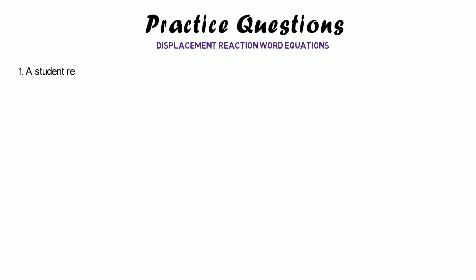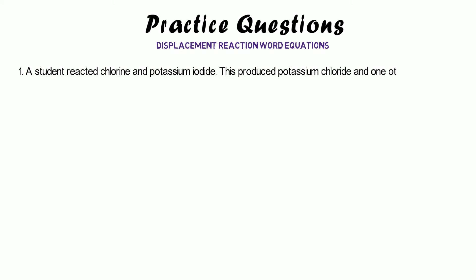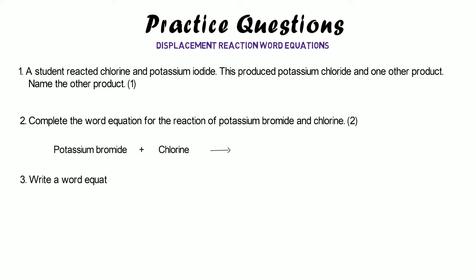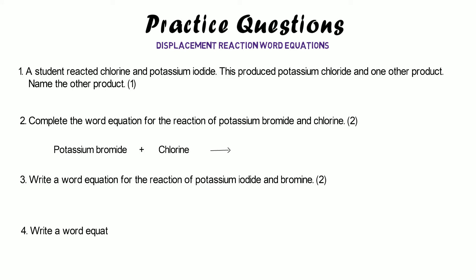Here are some practice questions for writing or completing word equations. Number one: a student reacted chlorine and potassium iodide. This produced potassium chloride and one other product — name the other product. Number two: complete the word equation for the reaction of potassium bromide and chlorine — potassium bromide plus chlorine gives what? Number three: write a word equation for potassium iodide and bromine. And number four: write a word equation for sodium bromide and fluorine. Pause the video and have a go at these.